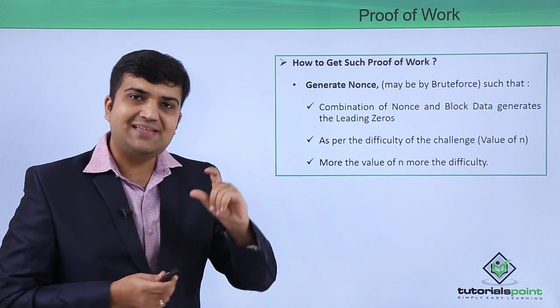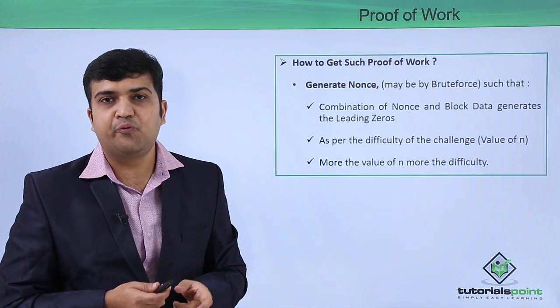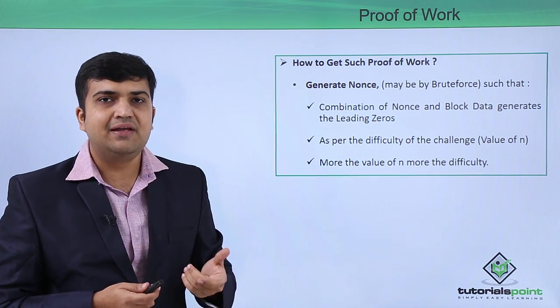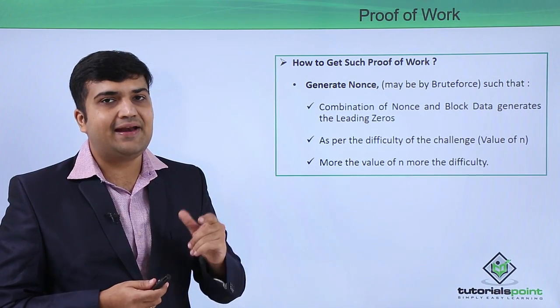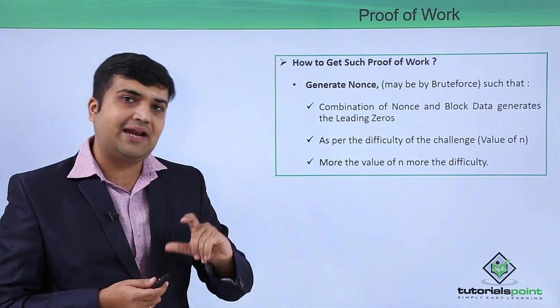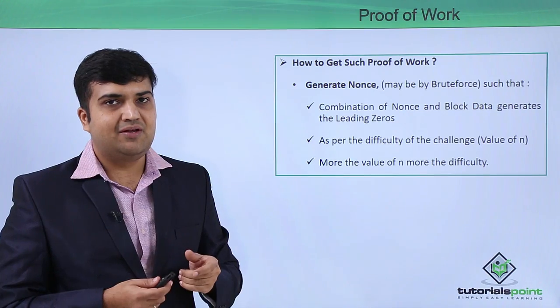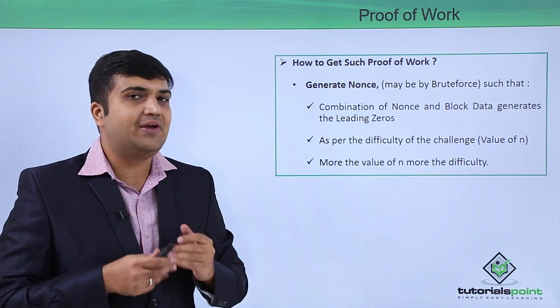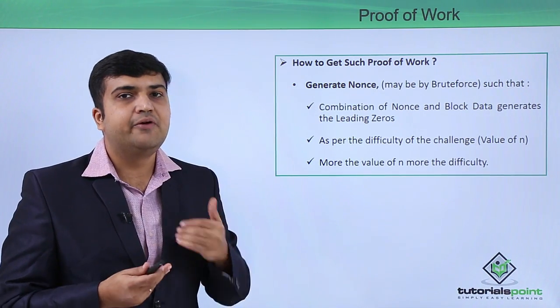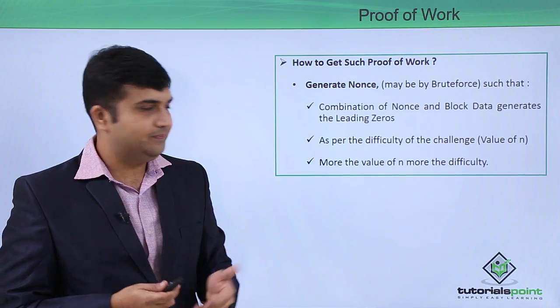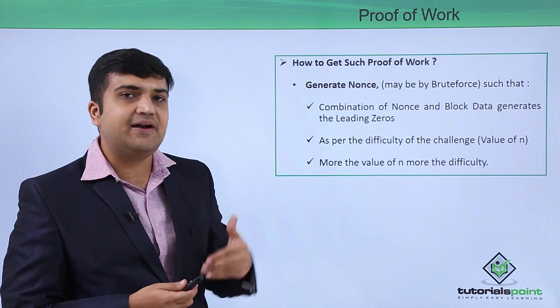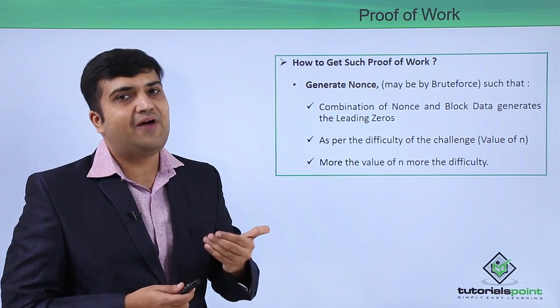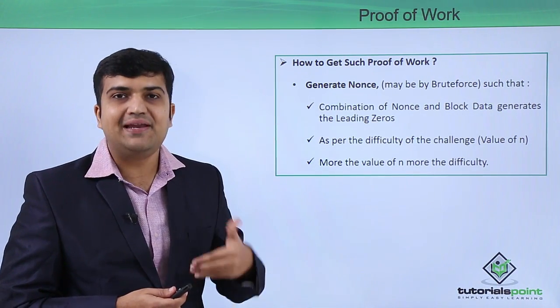You can set the value of n as per the difficulty of the proof of work which you want. For example, in case of bitcoins, they change the value of n every now and then as per the criteria of the algorithm. In your blockchain implementation, you can have your own custom algorithm for the difficulty of n. The more the value of n, the more difficult it will be for the computer to find such value with that many leading zeros.